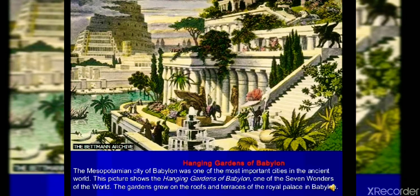Now, this is the Hanging Garden of Babylonia. There is a story that a king married a queen who came from a green, mountainous region. When she came to the south, it was a desert region.